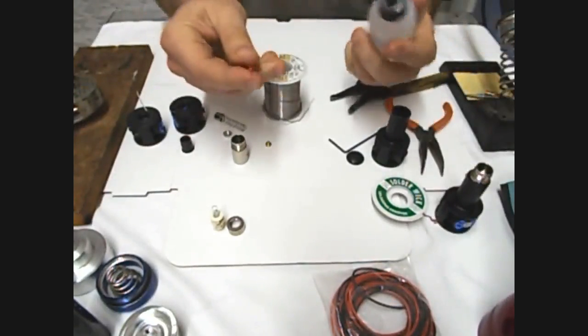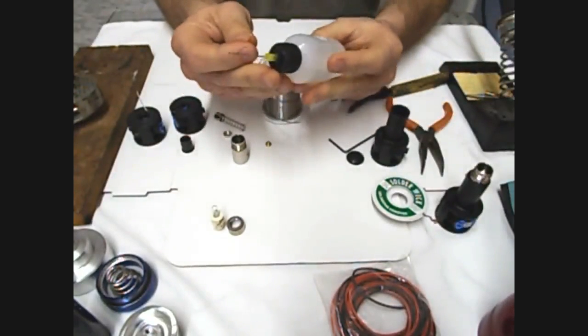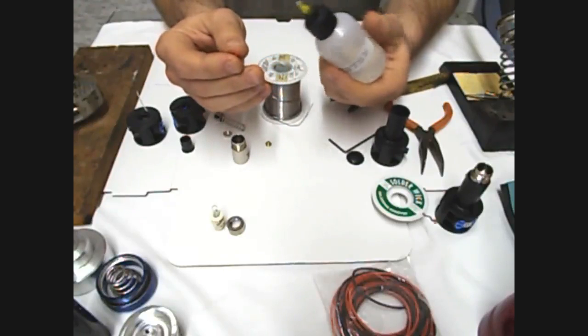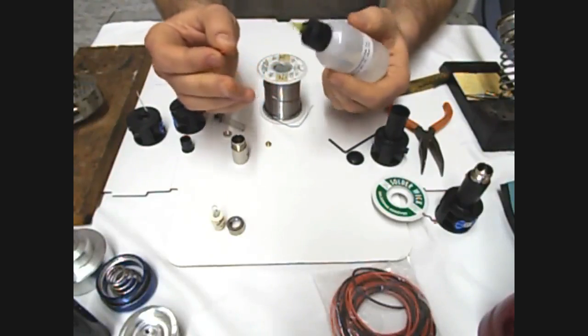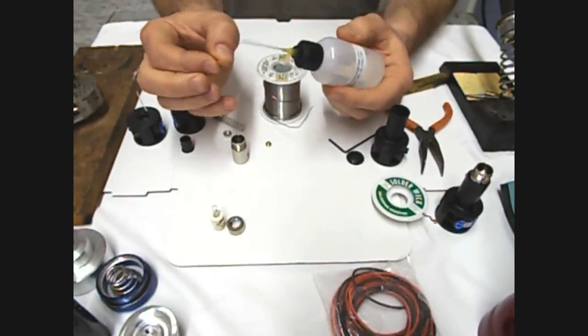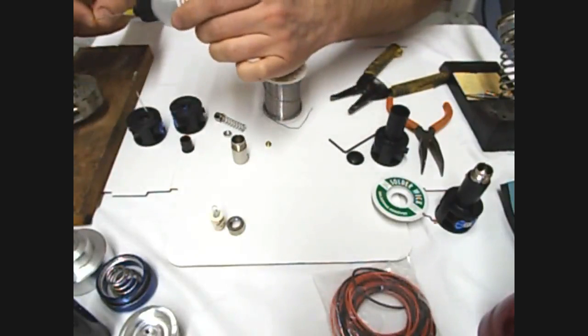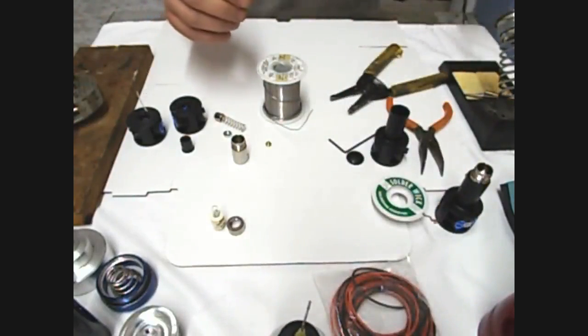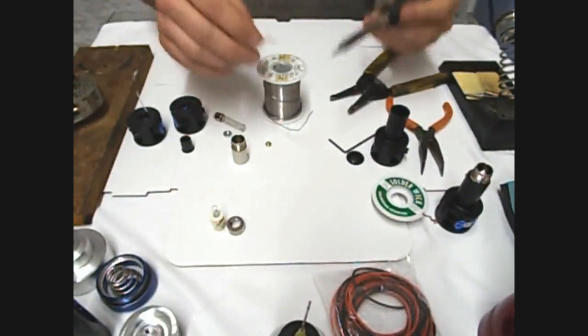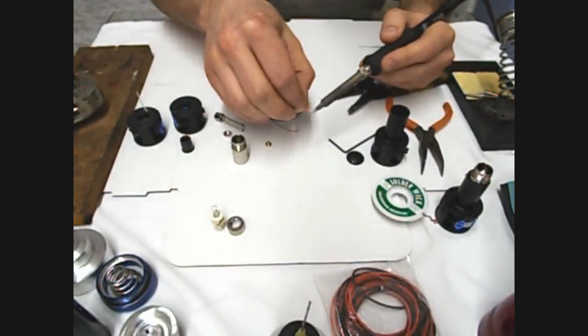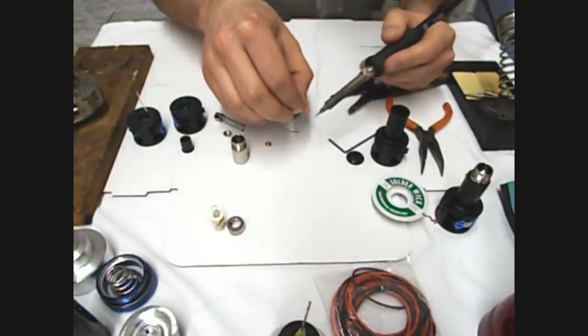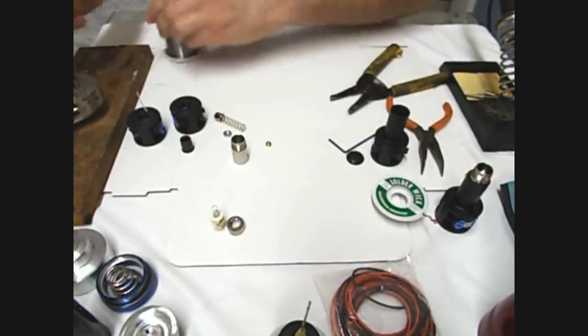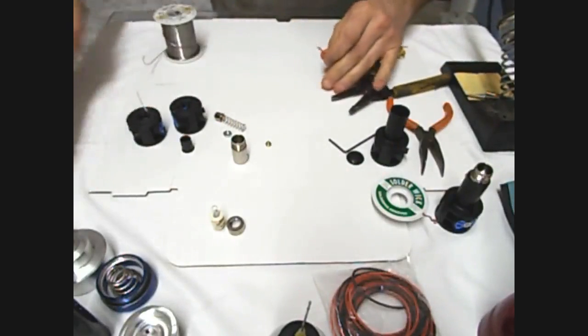And I always use some flux. This is Kester number 951 No Clean Flux. And I like No Clean for exactly that reason. Flux is an acid and if you don't clean it off when you're done it can weaken your solder joints. But this, you don't need that. It'll still leave a residue you can see, but you don't have to clean it off for fear of it weakening your joints.